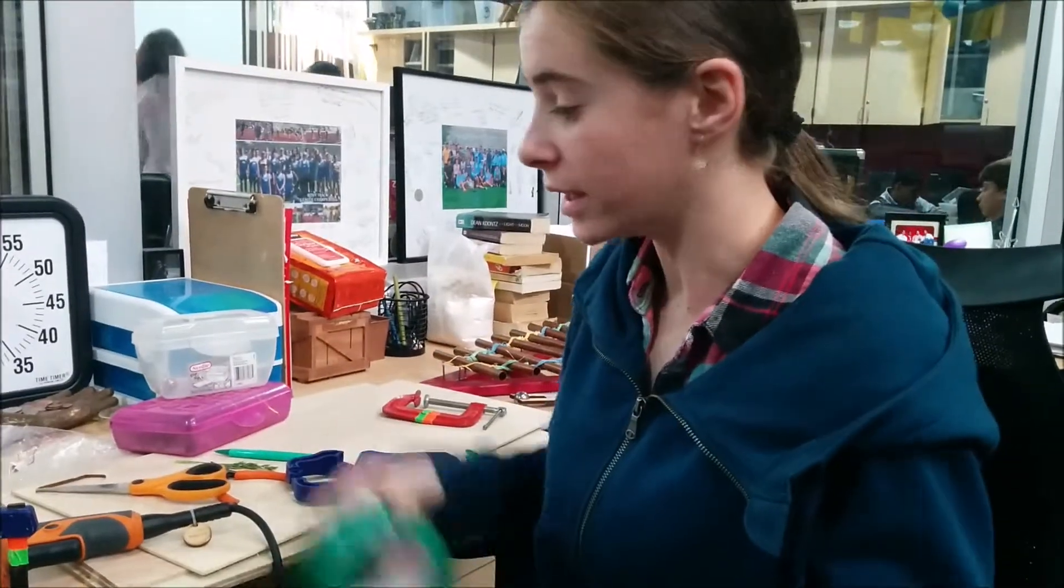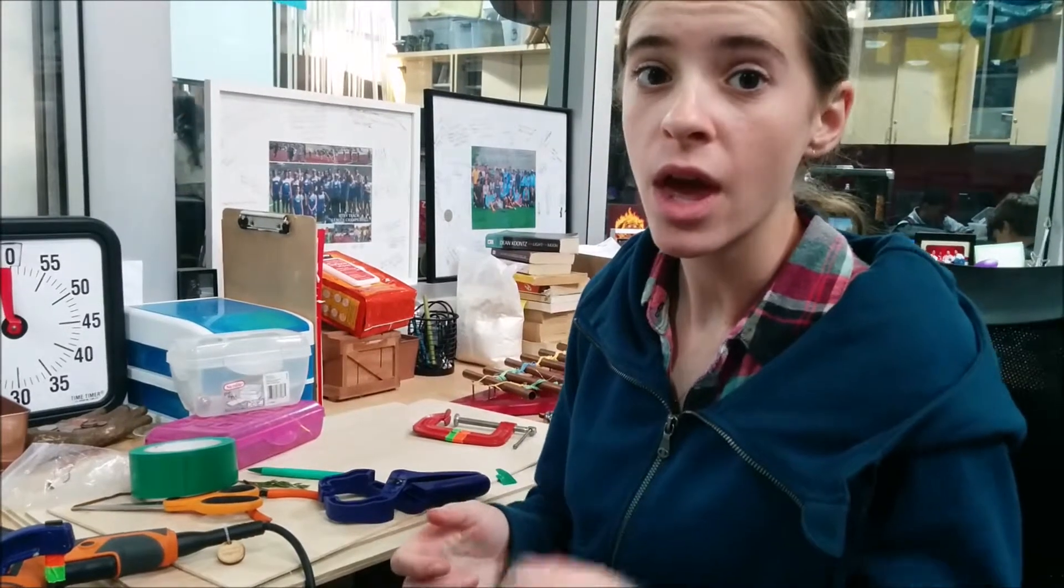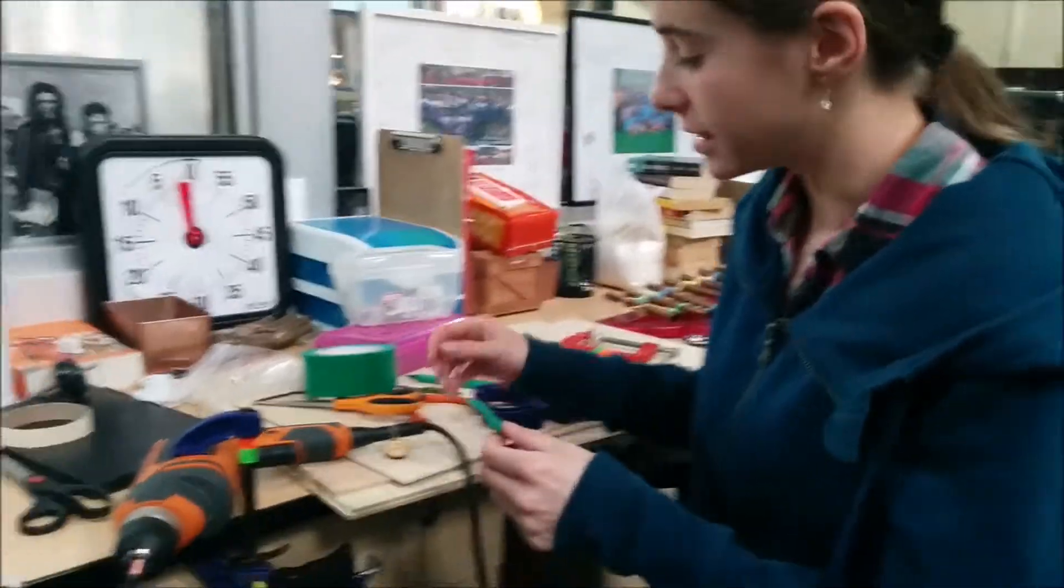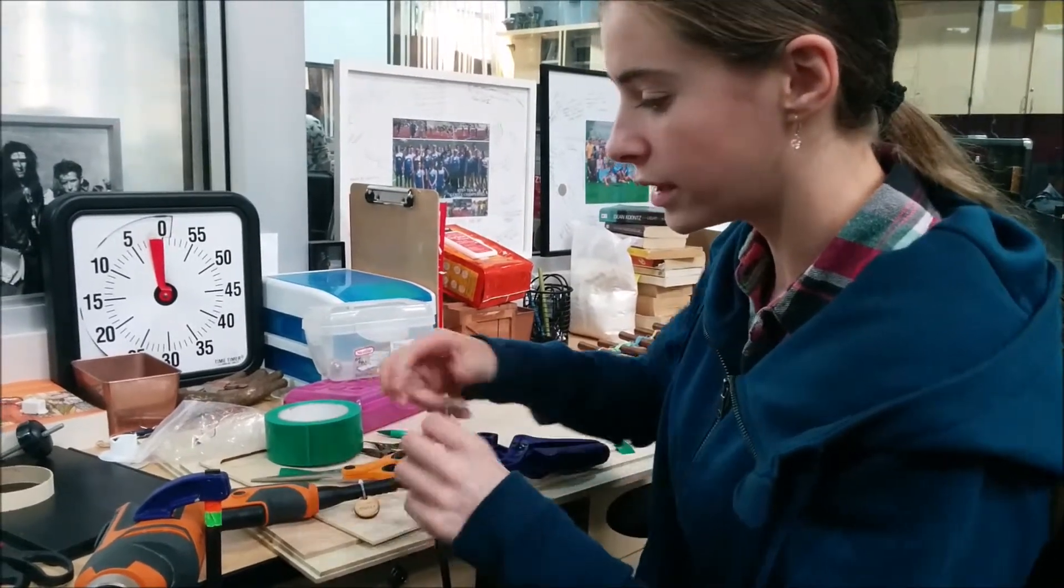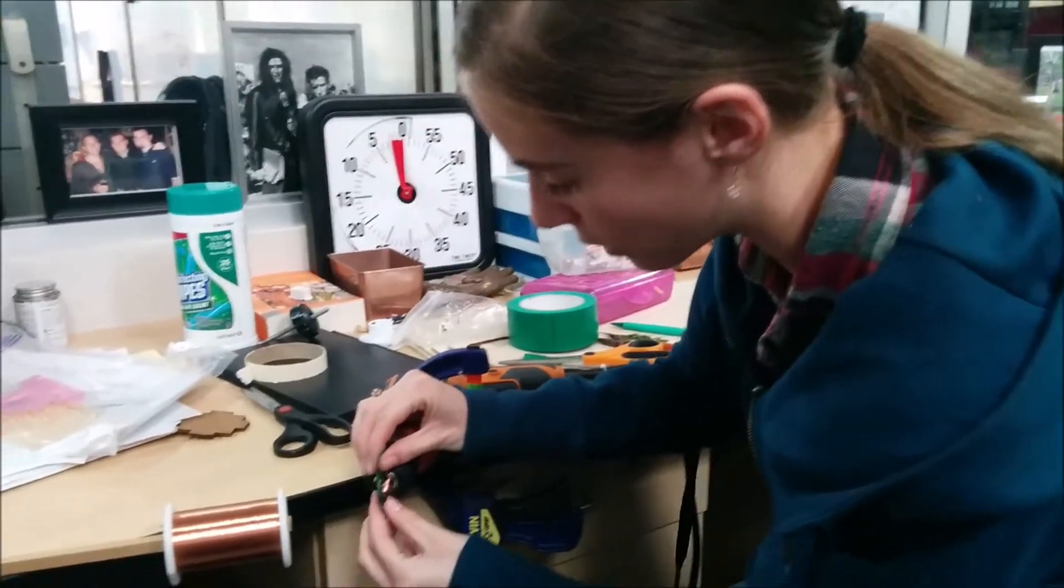Right after we're done coiling the copper wire onto the slug, we get some electrical tape and tape it around all the wiring so it doesn't unravel, leaving only two ends of it out.